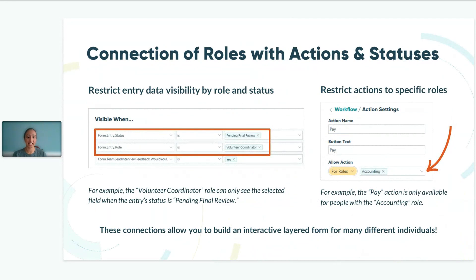The connection of roles, statuses, and actions together is what allows you to build custom workflows with unique form experiences for everyone involved. Actions and statuses can help guide the information a certain role can see on the form. For example, if the entry status is incomplete, one role might be able to input their details and submit the form, while another role might not see those fields at all. Similarly, you can make action buttons only available to certain roles — the manager role could have approve and deny buttons, while an employee would have their own action buttons.